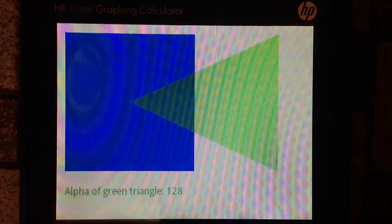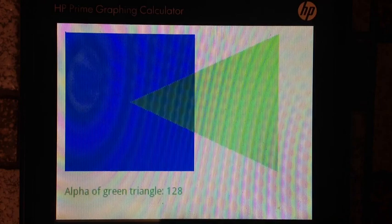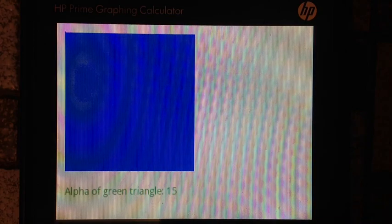Lowering the alpha to 128 and you notice that the triangle is starting to get transparent and faded. And when I lower the alpha to 15, the triangle is almost gone.